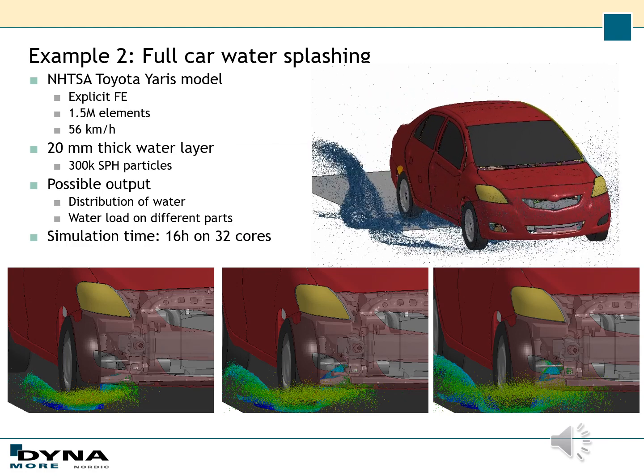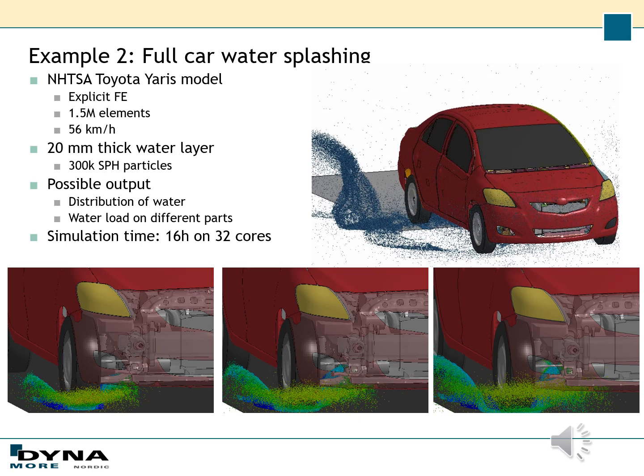To show a more realistic splashing example, I used the Toyota Yaris model from NHTSA, which is an explicit finite element model with roughly around one and a half million elements. I let it run at 56 km per hour through a 20 mm thick water layer. You can see the results to the right and the pictures at the bottom of the page. Typically you could look at the distribution of water, see how it impacts different underbody panels, and extract the water load on different parts of the car. The simulation time for this example was around 16 hours on 32 cores.